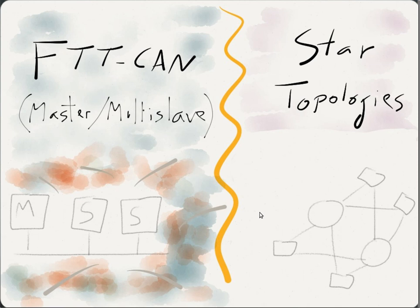So on the one hand, we have FTT-CAN, which introduces flexibility. And on the other hand, we have replicated STAR topologies, which can provide better reliability.